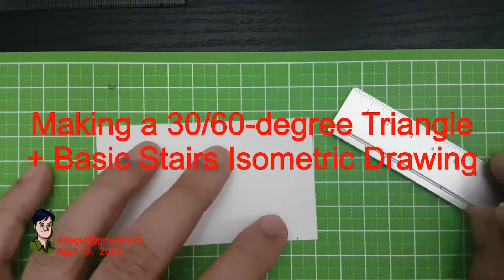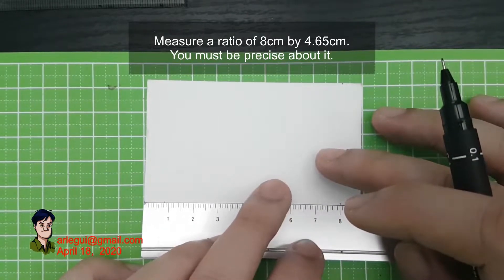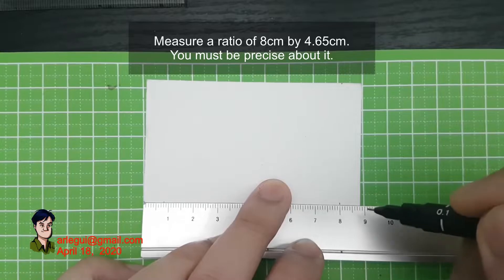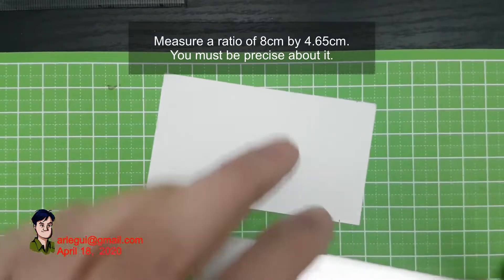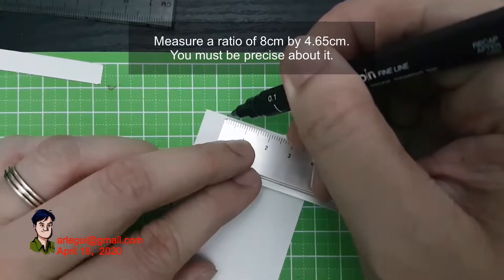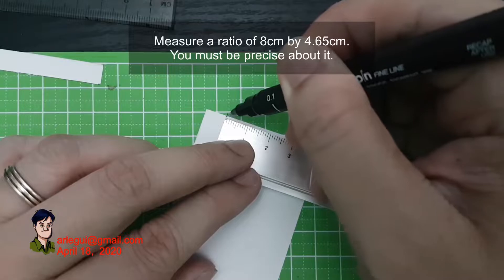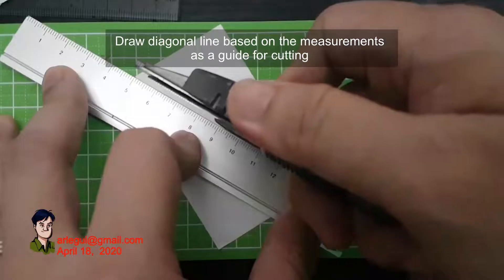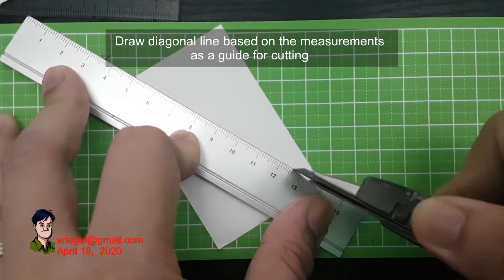So what if you do not have a 30 to 60 degree triangle and you desperately need to do some architectural work? Here I'm going to be showing you how to do this and you need just a simple thing like a calling card. Right here I'm using my personal calling card.